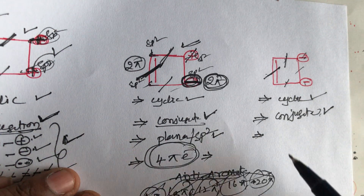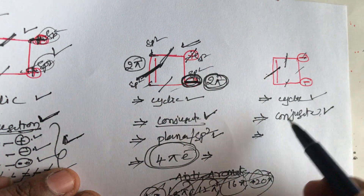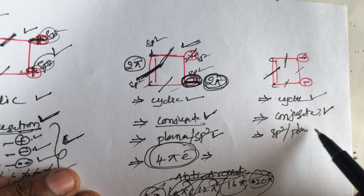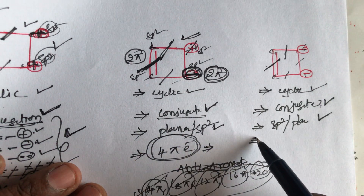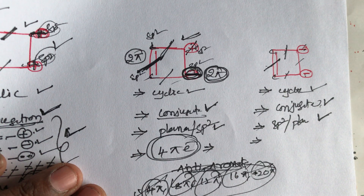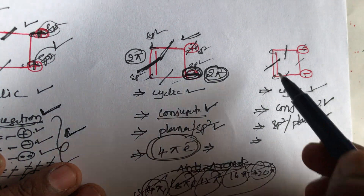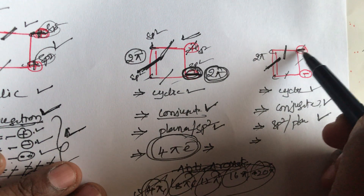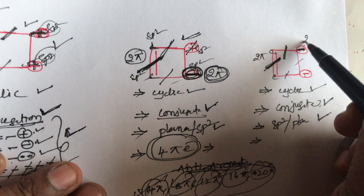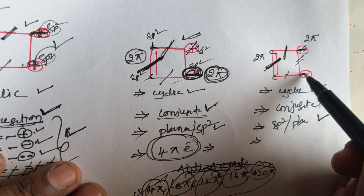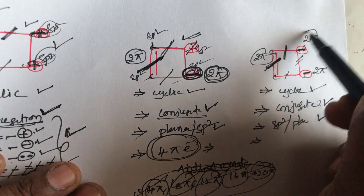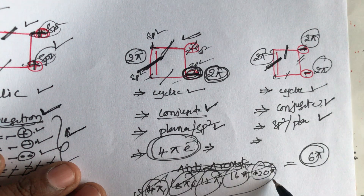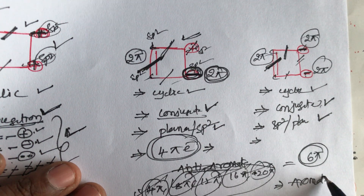Third condition: compound must be planar. In this compound, all four carbons undergo sp2 hybridization with planar shape, so the third condition is satisfied. Fourth condition: compound must follow Hückel's rule. There is one pi bond giving 2 pi electrons, and two negative charges each contributing 2 pi electrons — total 6 pi electrons are present. Six pi electrons belong to aromatic.